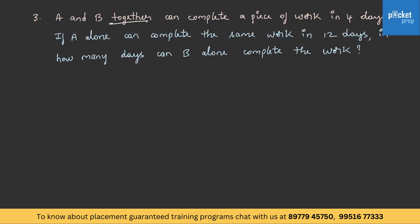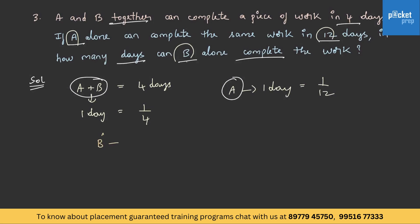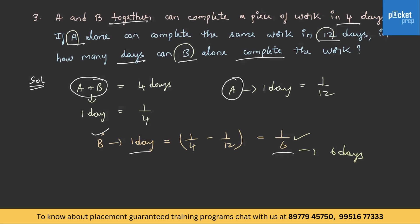A and B together can complete a piece of work in 4 days. If A alone can complete the same work in 12 days, in how many days can B alone complete the work? A and B's 1 day work is 1 by 4, and A's 1 day work is 1 by 12. B's 1 day work equals 1 by 4 minus 1 by 12, giving 1 by 6. Therefore B alone can complete the work in 6 days.